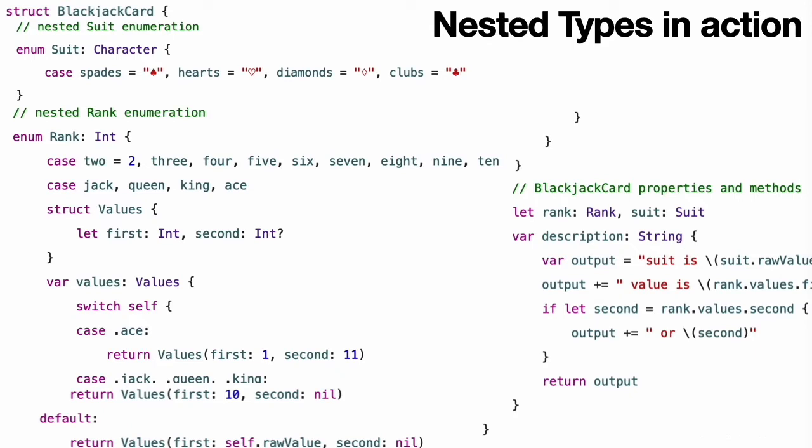Nested Types in Action. This example defines a structure called BlackjackCard, which models a playing card as used in the game of Blackjack. The BlackjackCard structure contains two nested enumeration types called Suit and Rank.